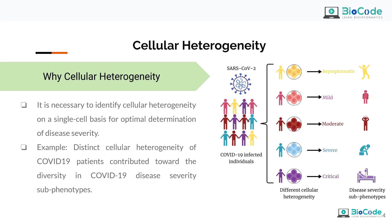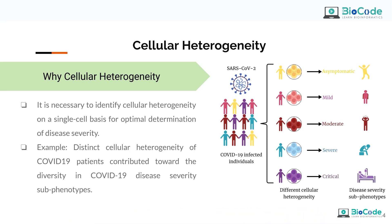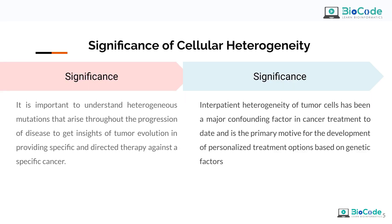This is where single cell RNA sequencing helps us. Why do we need to care about cellular heterogeneity? During the COVID-19 pandemic, various different patients expressed various different symptoms, giving different responses to the viral infection — some were asymptomatic, some had mild, moderate, severe, or critical symptoms — all due to different cellular heterogeneity and different immune responses. It is necessary to identify cellular heterogeneity on a single-cell basis for optimal determination of disease severity.